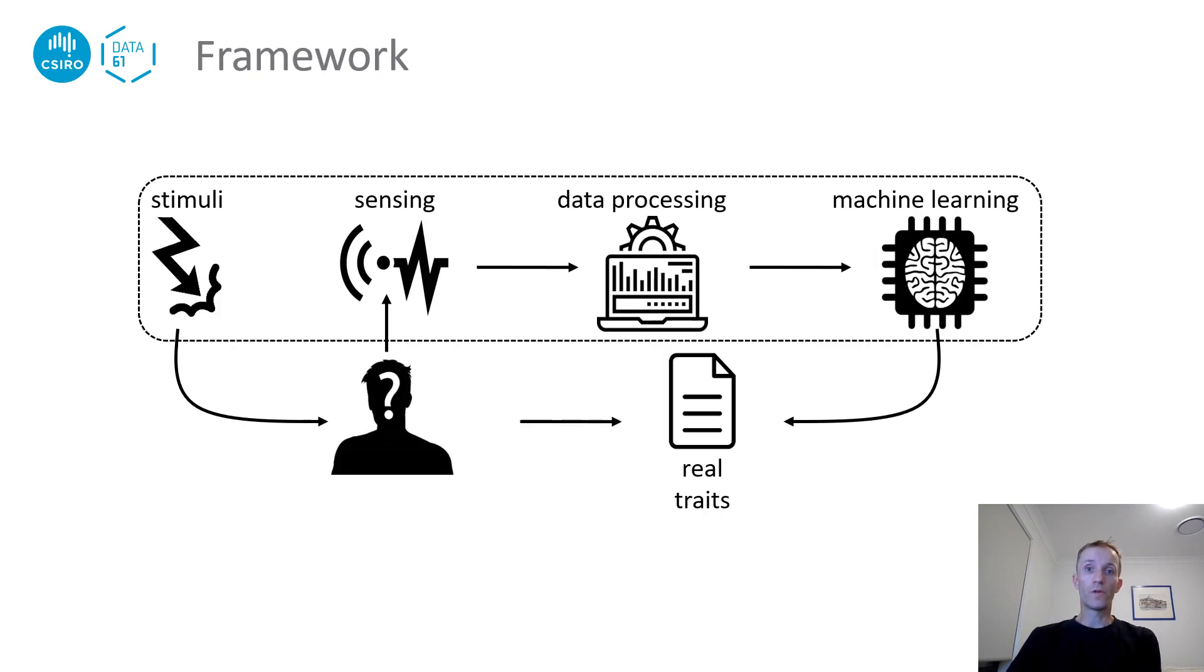So, we designed a framework for the objective detection of personality traits. Some stimuli are given to a user while we collect a range of physiological and behavioral signals from which we extract a series of features. We then use machine learning to predict the personality trait rankings of the user on the previous inventories. To calibrate the models, we train them using supervised machine learning using ground truth data obtained through questionnaires.